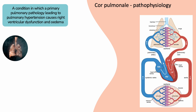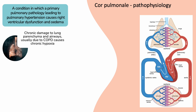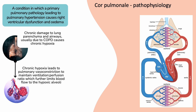In COPD, there is chronic hypoxia due to airway damage, which causes an imbalance in the ventilation-to-perfusion ratio in the lungs. In this scenario, there is reduced air entry to the alveoli, and therefore the pulmonary arterioles undergo vasoconstriction to maintain the ventilation-perfusion ratio.